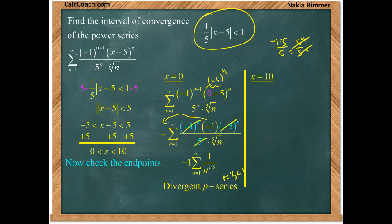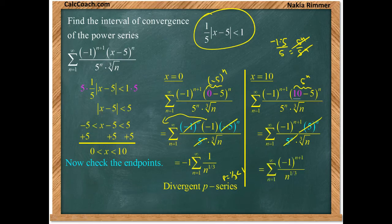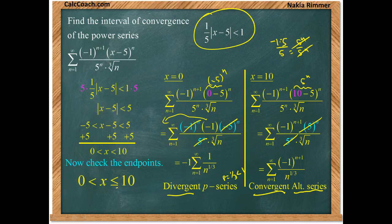At the other endpoint, x equals 10, we replace x with 10. This gives a 5 to the n in the numerator, and the 5 to the n's cancel, leaving an alternating series with n to the 1 third in the denominator. That converges by the alternating series test — technically conditionally, but we just need to confirm convergence. So the series diverges on the left at 0 and converges on the right at 10, giving us the interval of convergence from 0 to 10, with a closed bracket at 10: (0, 10].